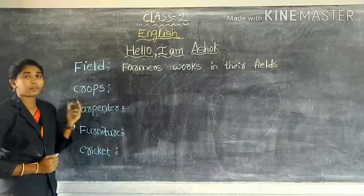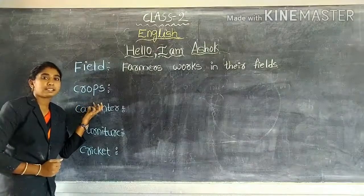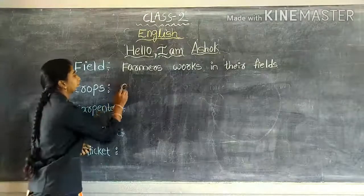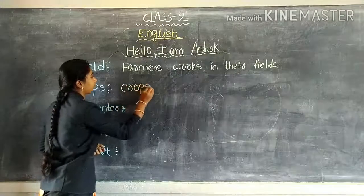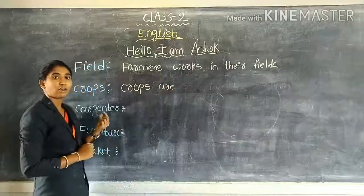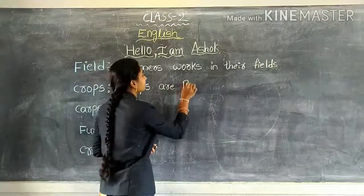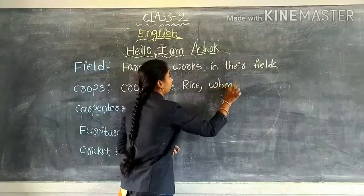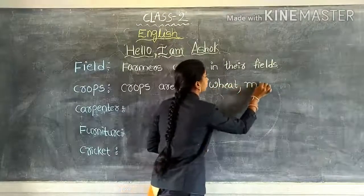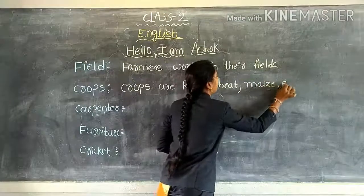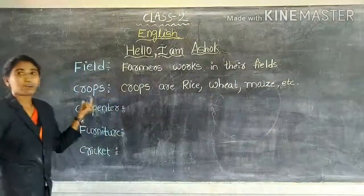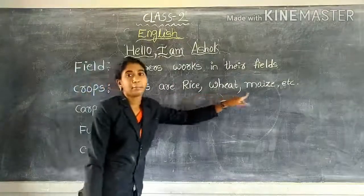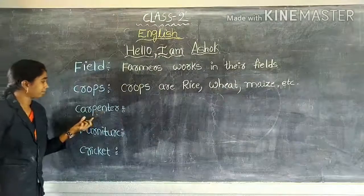Now let's go to the next vocabulary. That is nothing but crops. Vocabulary of crops — crops means what? Crops are rice, wheat, maize and so on. So vocabulary of crops is: crops are rice, wheat, maize etc.